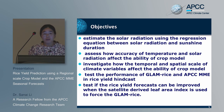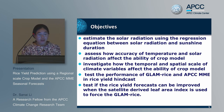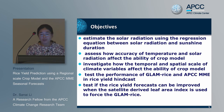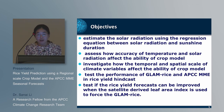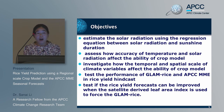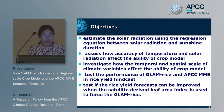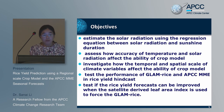The objectives of this study are to estimate solar radiation using the regression equation between solar radiation and sunshine duration. Then assess how the accuracy of temperature and solar radiation affect the ability of crop models, and investigate how the temporal and spatial scale of climate variables affect the ability of crop models.